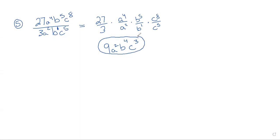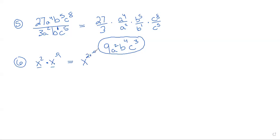So it looked like a long, complicated problem, but once we separated it out, we saw that it really was just four separate, simpler problems. Let's go to number 6: x to the second power times x to the negative ninth power. We're just going to add the exponents because it's a multiplication problem with the same base, so the base stays the same. 2 plus negative 9 gives us x to the negative seventh power.